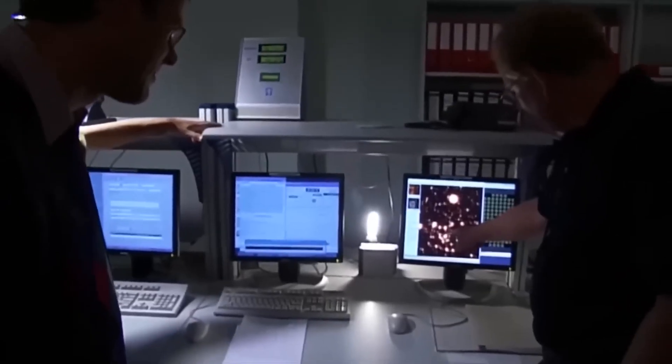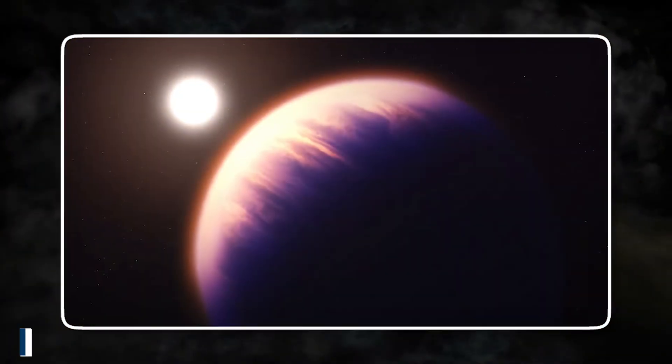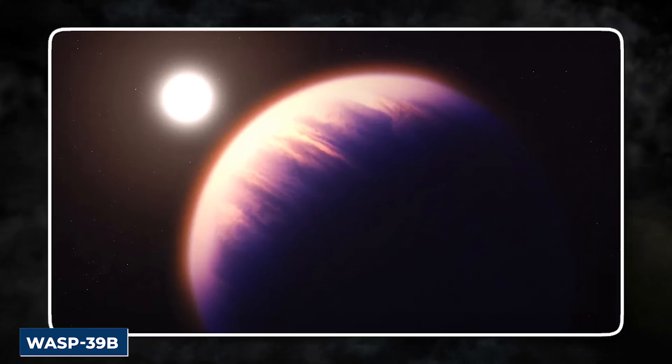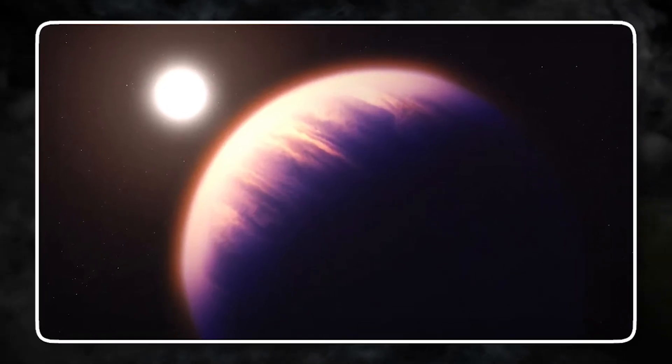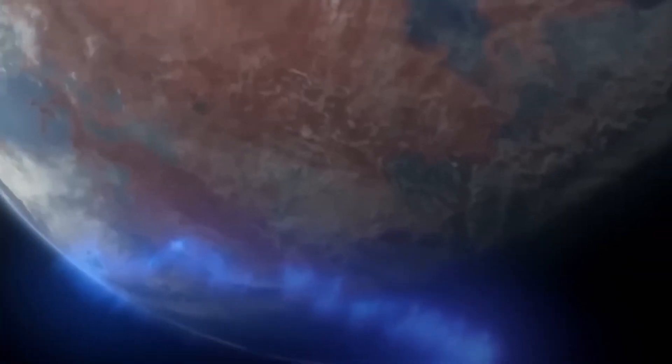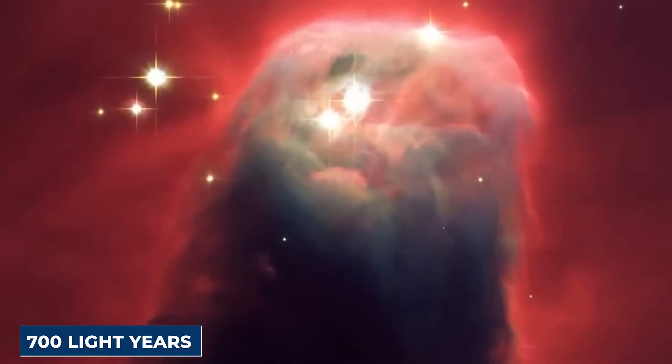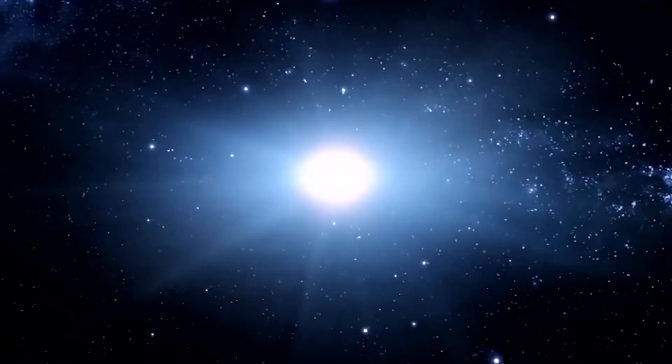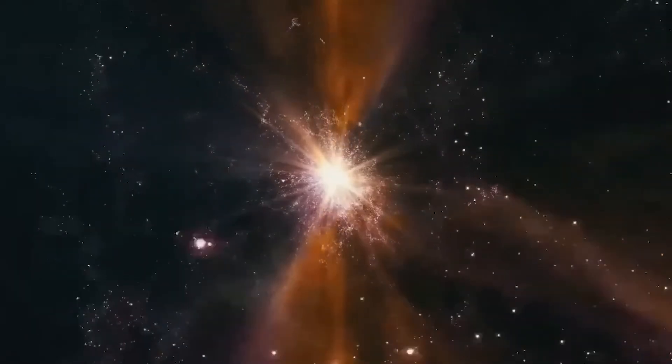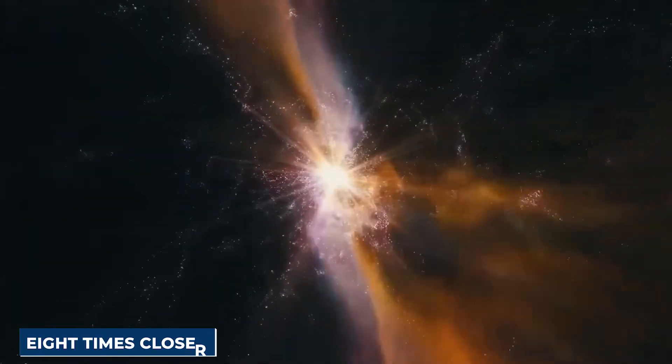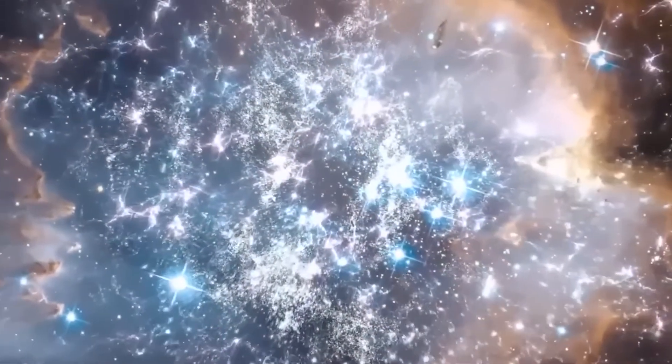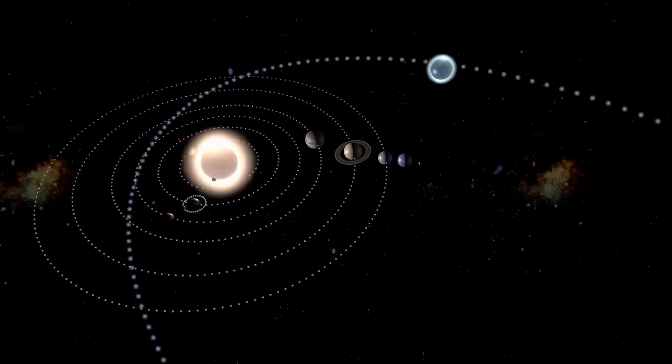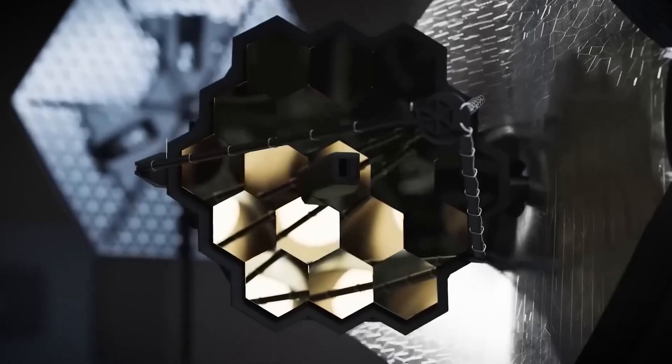Webb's fascinating discovery includes the exoplanet WASP-39b, which orbits a star in the Virgo constellation. This gas giant, similar in size to Saturn, is located about 700 light-years away from Earth. What sets it apart is its exceptionally close proximity to its host star, orbiting at a distance approximately eight times closer than Mercury is to the sun. Webb's capabilities have allowed for extensive research on this exoplanet, making it one of the most studied outside of our solar system.